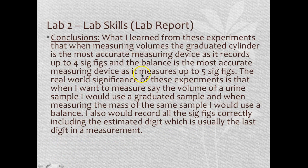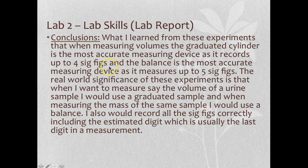In conclusion: when measuring volumes, don't use beakers or flasks — use a graduated cylinder, which gives the most accurate volume measurement with four significant figures, or two digits after the decimal point. The top-loader balance is the best measuring device for mass, giving five significant figures — three digits after the decimal point.